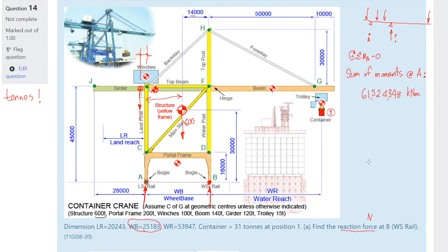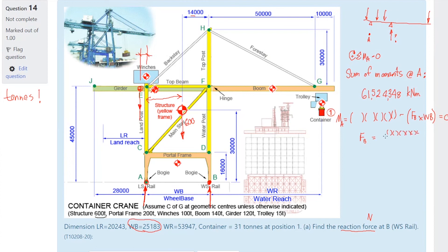The total clockwise moment equals force at B times the wheelbase. So force at B equals the total moment divided by the wheelbase. That gives approximately 2,443 — but something looks off, so let's double-check.